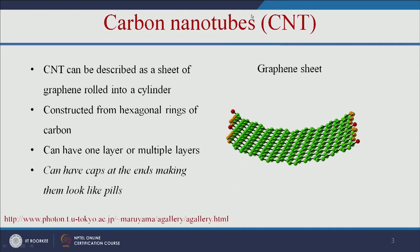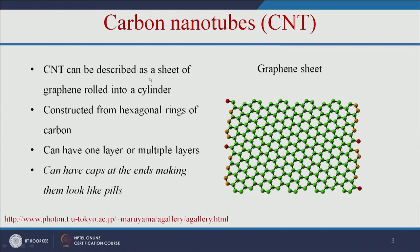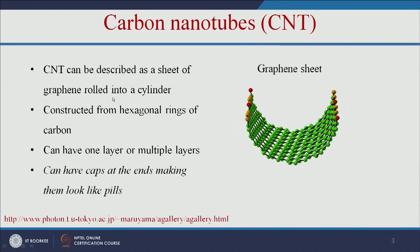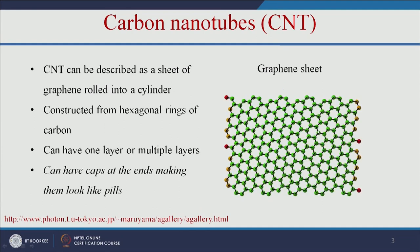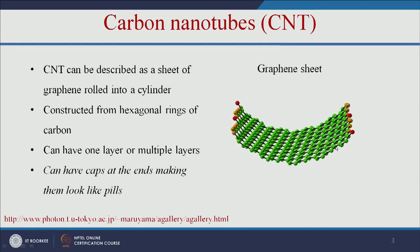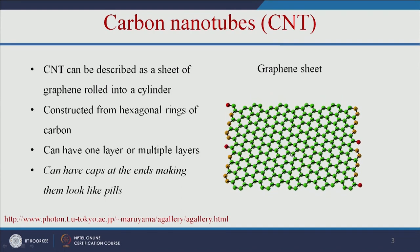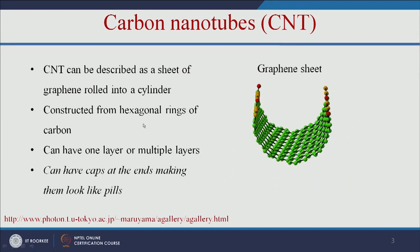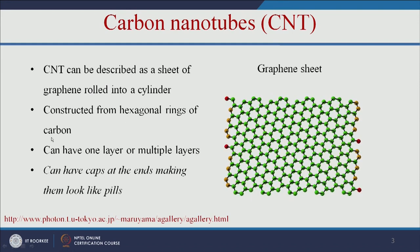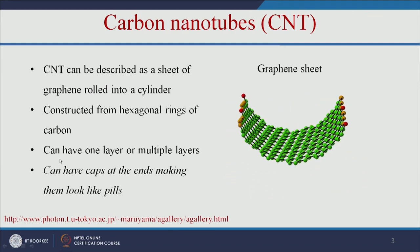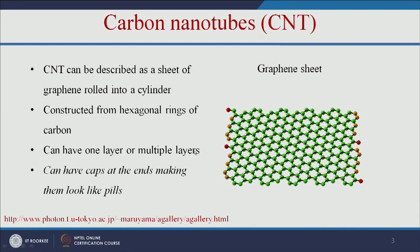So let us see what a carbon nanotube is. The carbon nanotube can be described as a sheet of graphene rolled into a cylinder. As you can see in this animation, this is a graphene sheet rolled into a cylindrical shape. This is called a carbon nanotube. Graphene is mainly made up of hexagonal rings of carbon, and carbon nanotubes can have one layer or multiple layers of graphene sheet.